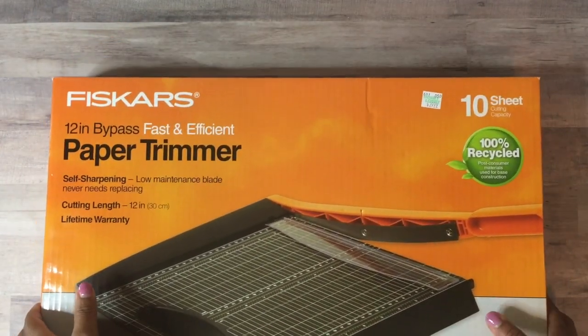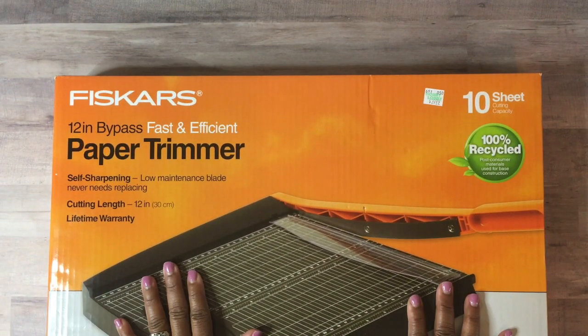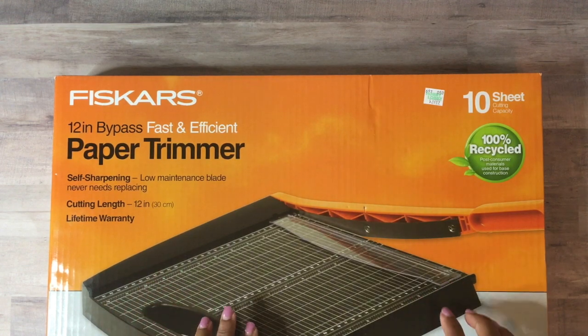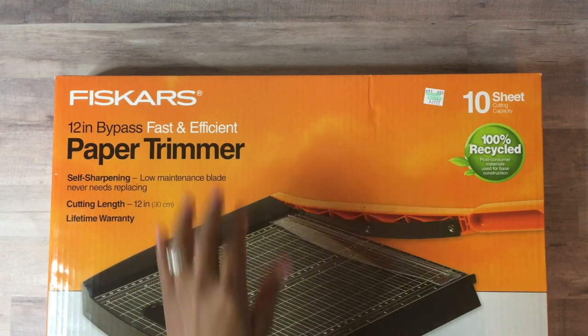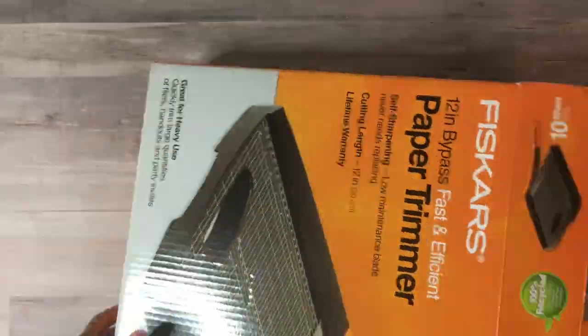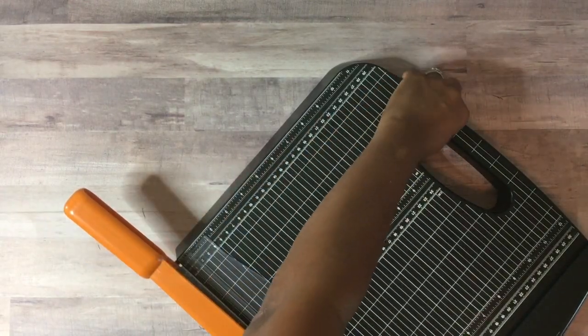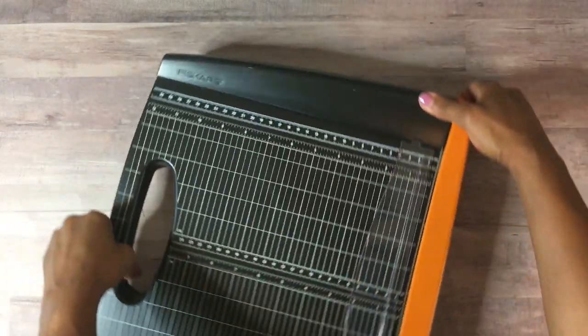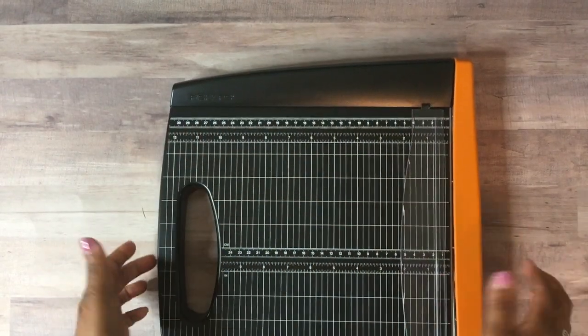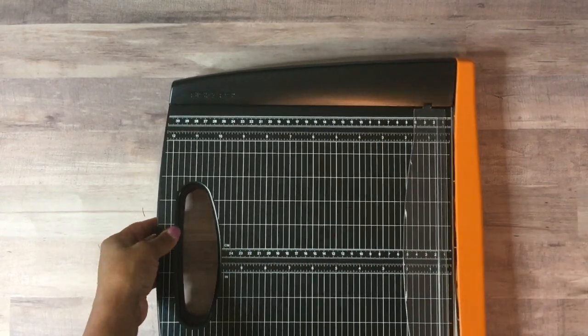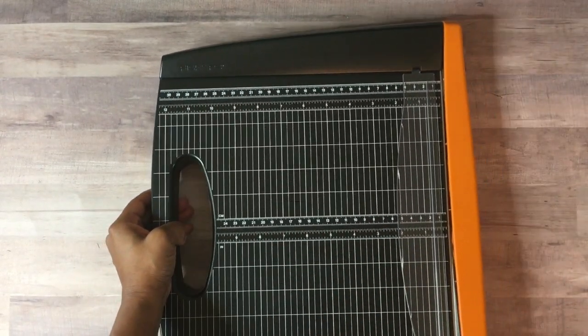Okay, so guys, this is the Fiskars 12 inch bypass fast and efficient paper trimmer. Let's go ahead and open this up. All righty. So this is how it looks right out of the box.